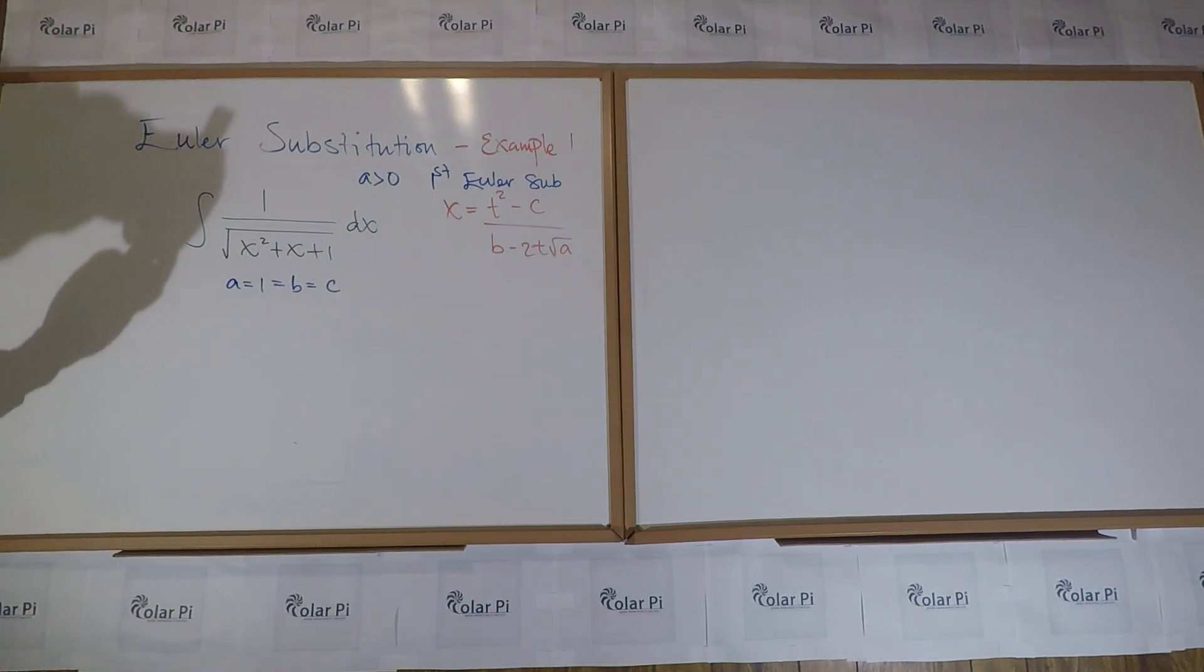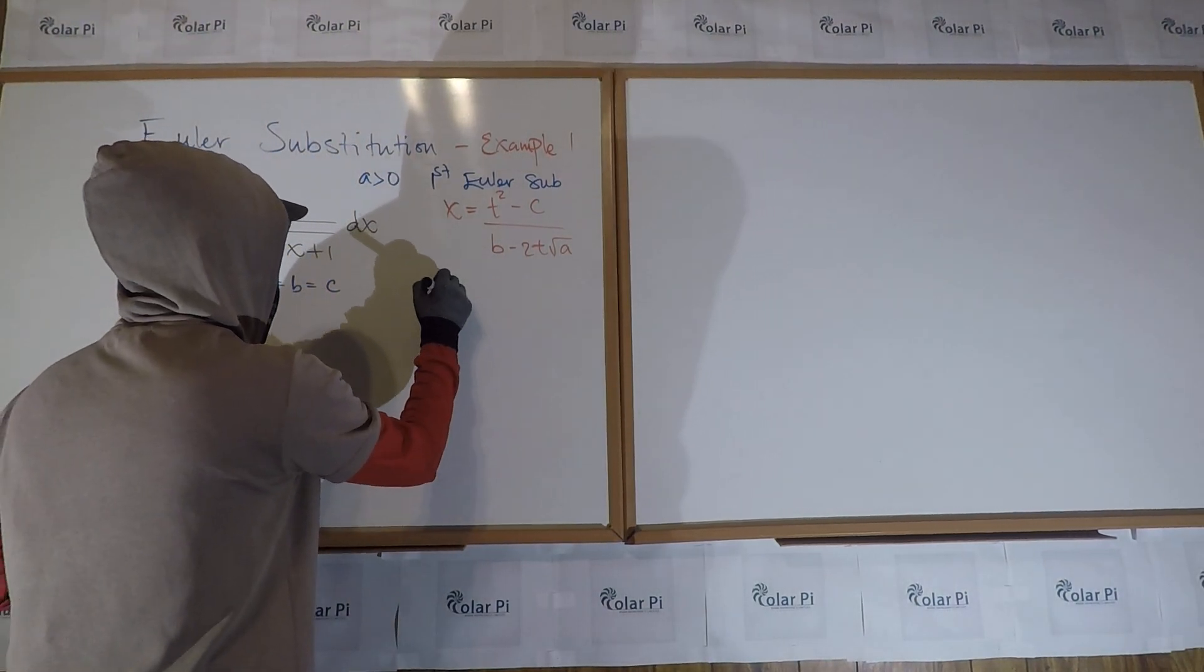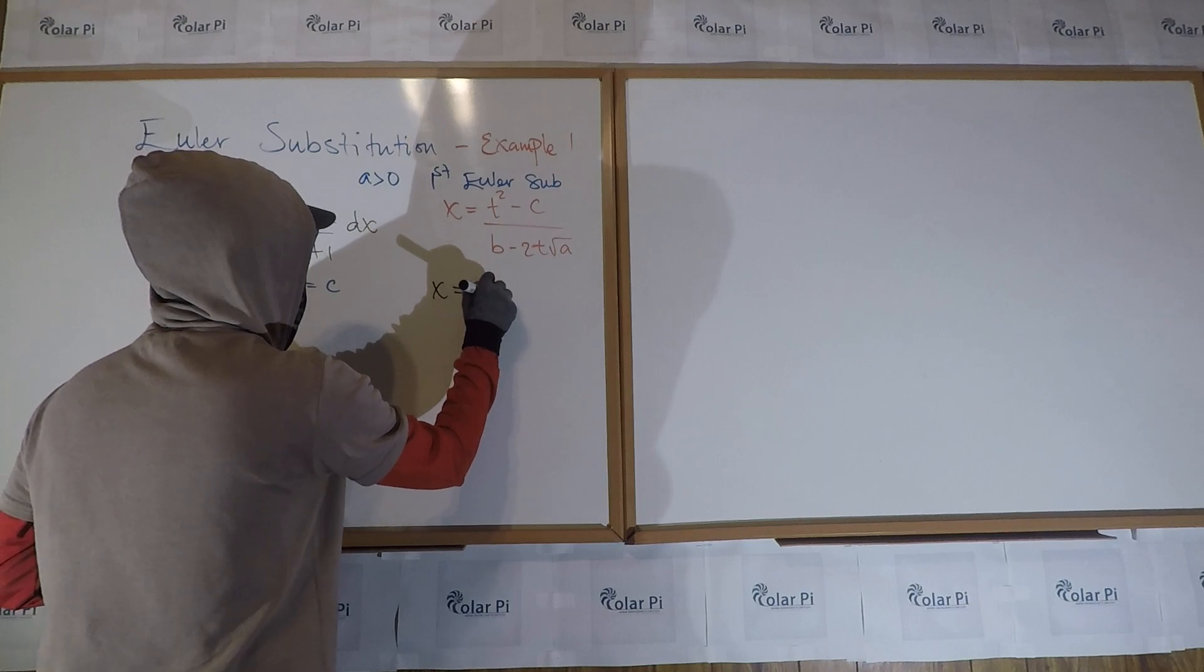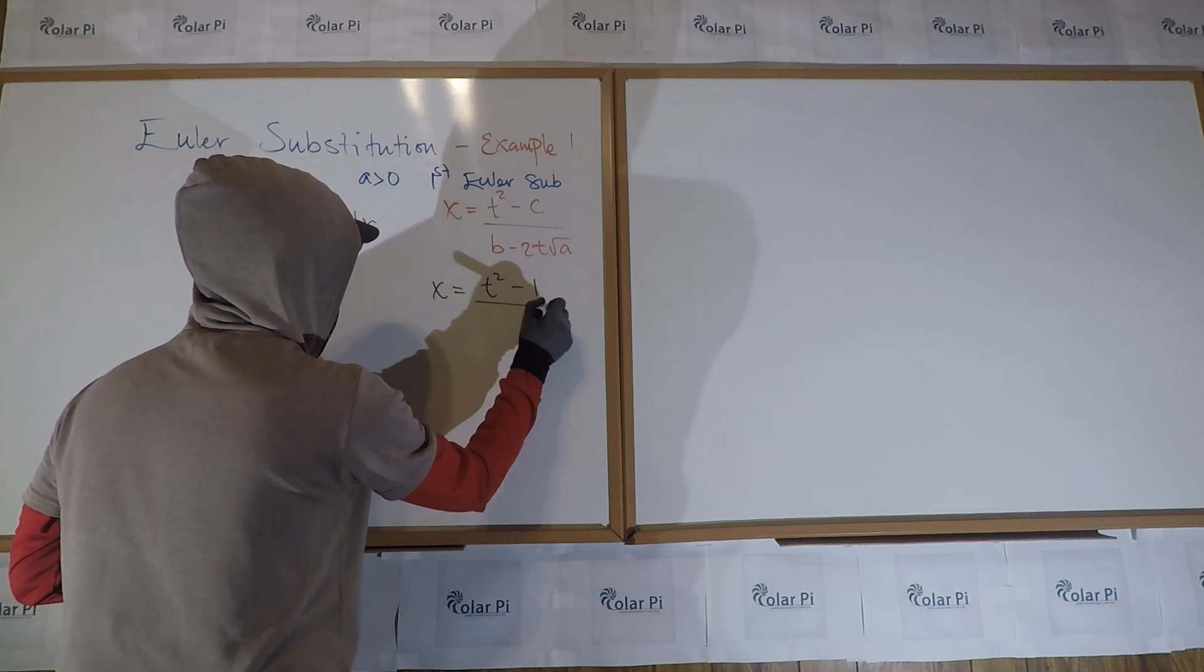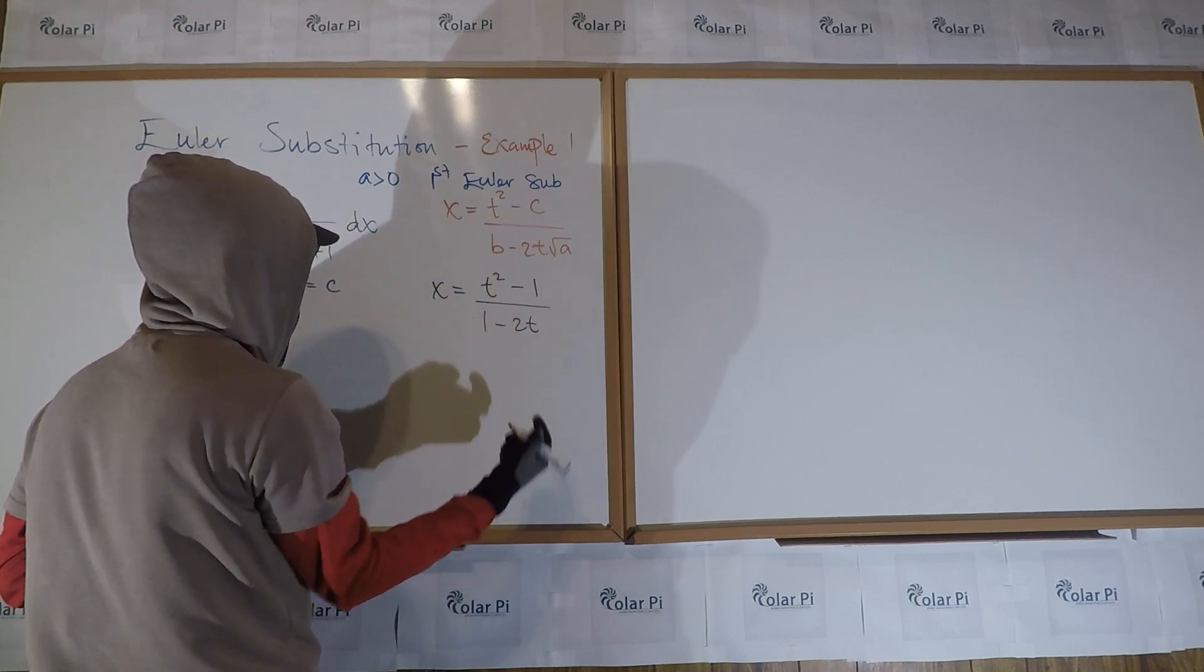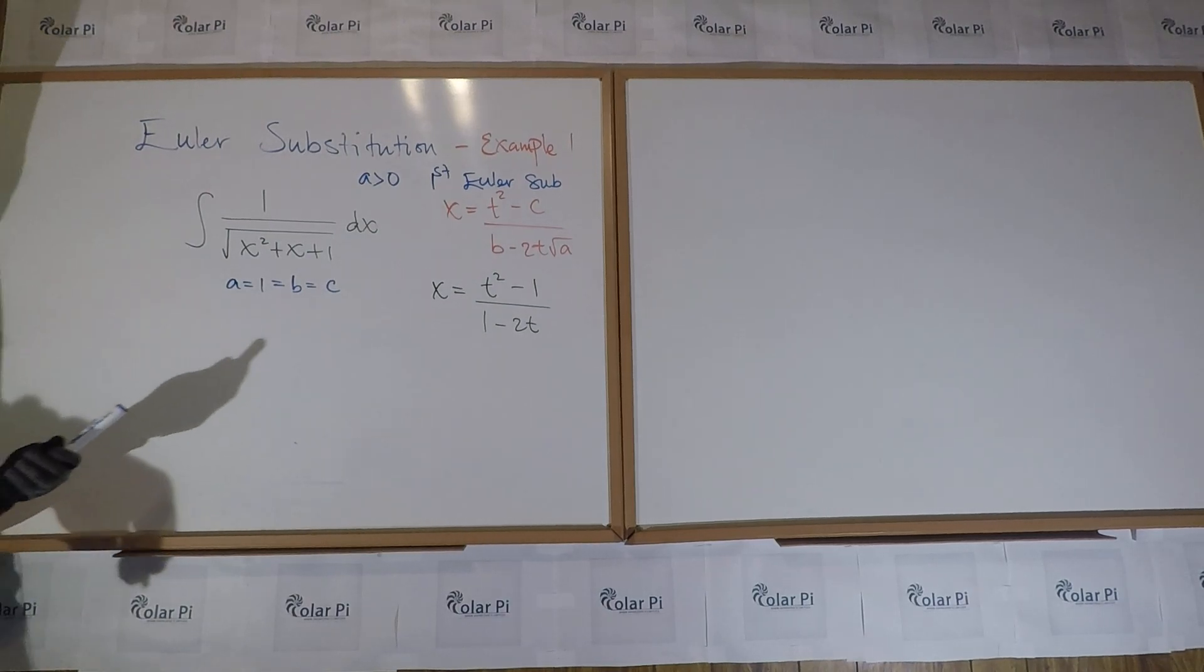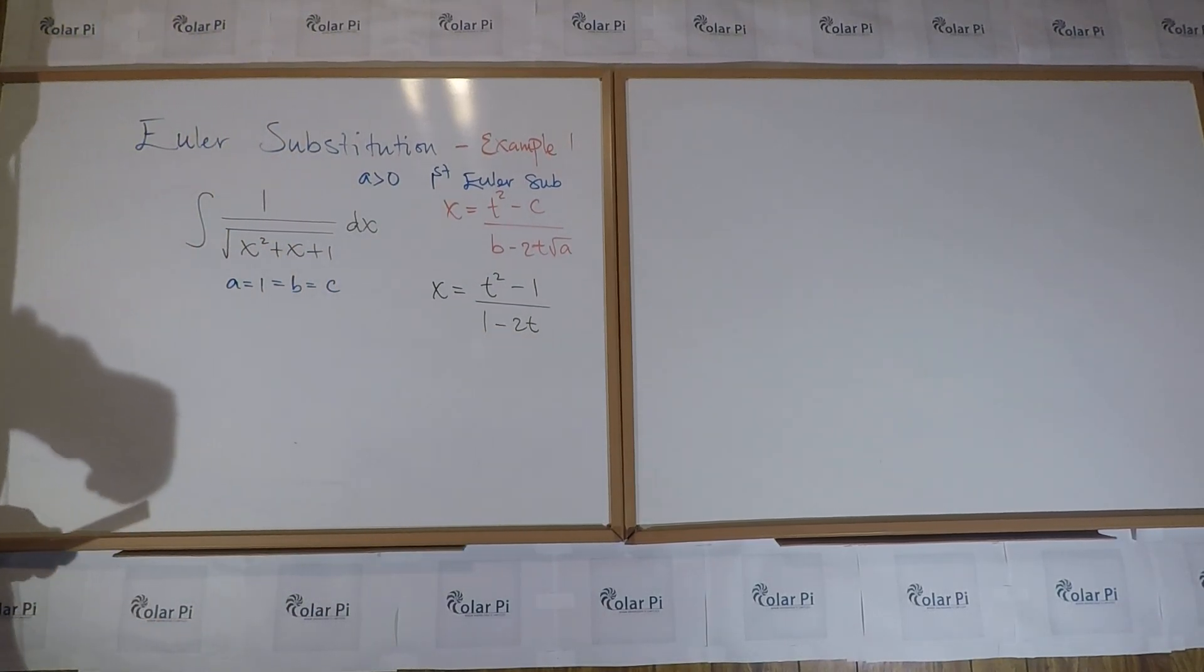So then we're going to begin by saying that X is equal to T squared minus one, because C is one, over B is one minus two T, A is one. And so root one is just one. So we began with X equaling this right hand side.